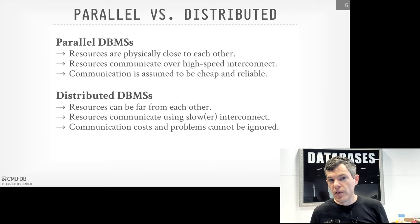Above the exchange operator is the join operator, because we know we've built everything needed in our hash table on the build side. When the exchange operator gets notification from everyone below, it signals we can do the join. Then we do the same thing on B — divide into three partitions, apply filters and projections, and probe the hash table in parallel. We don't need an exchange operator above the probe because tuples are coming out as we probe for matches, but we do need one to know when we've finished processing all the data in the B pipelines. That exchange operator produces a single output stream from the three pipelines below.